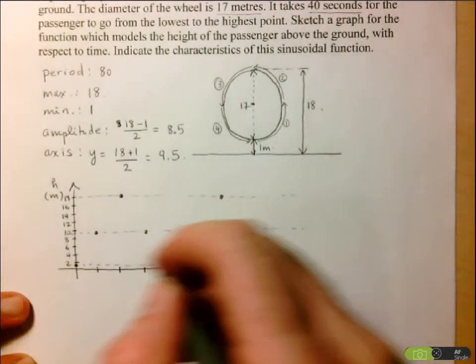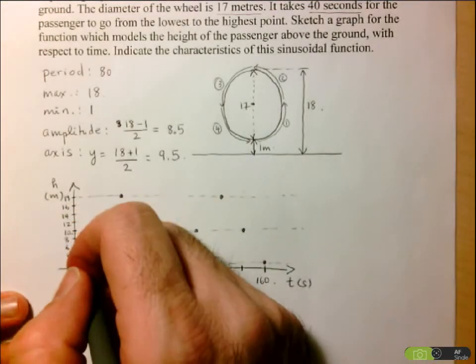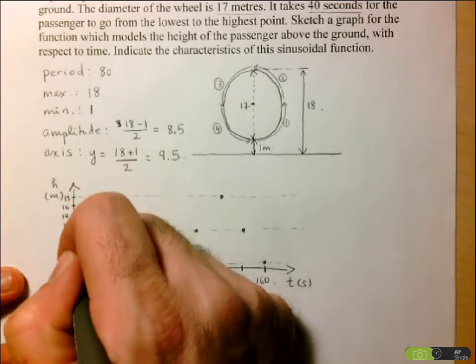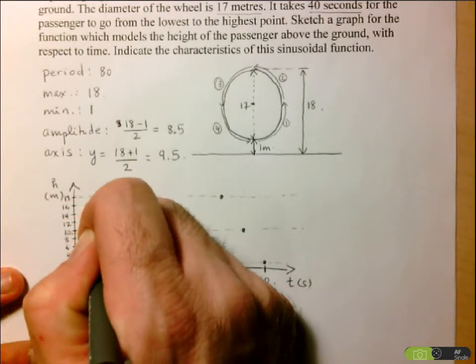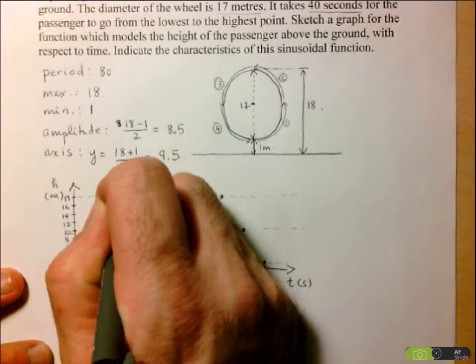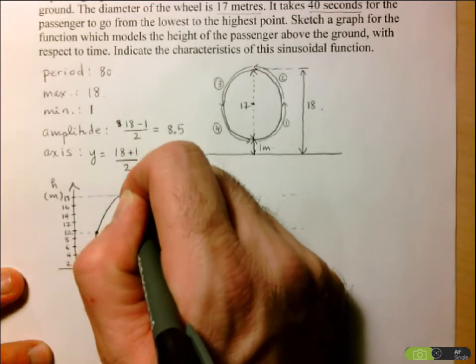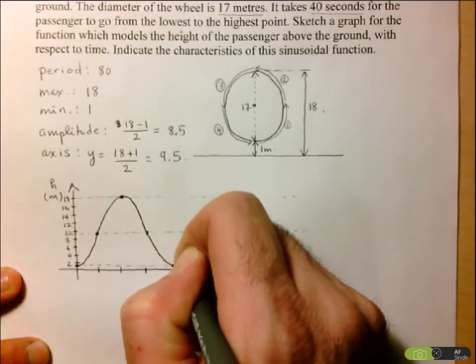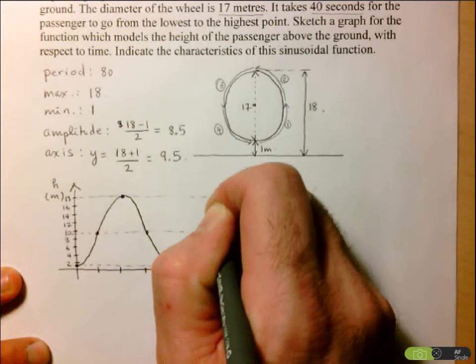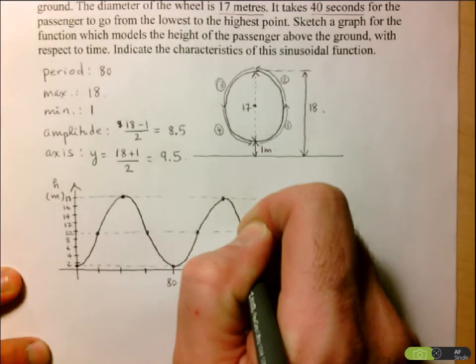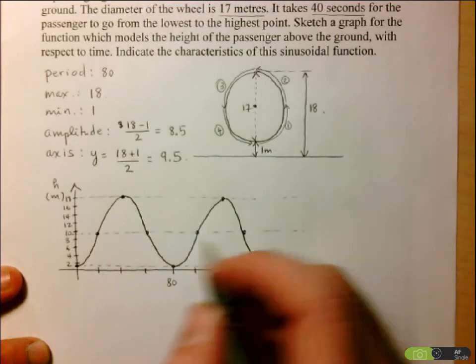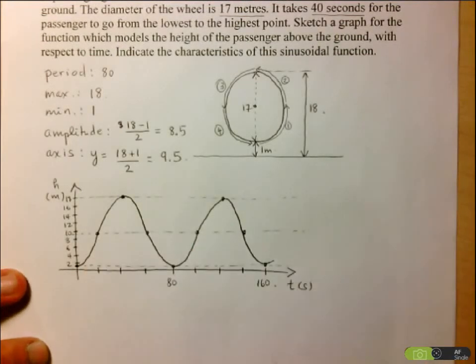And so now that I've got these points, again, I want to be careful to draw it as a sinusoidal function. So I can't just draw straight lines. I have to make it curvy. So I'm going to curve and make sure it looks like the sine function. As best as I can. Come back down. Go back up. And then come back down again. And of course this could continue on, but I've decided to only draw two cycles.